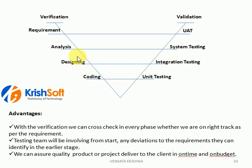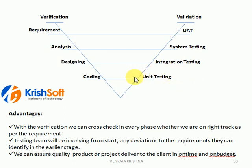Once the design phase is completed, it is the coding phase. Development people will start developing the programmable statements. Once they complete anything, the development people themselves will do the unit testing — as we have already seen in white box testing levels, unit testing is done by the development team.